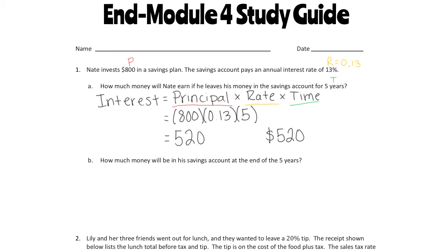For Part B: how much money will be in the savings account at the end of 5 years? To find the total, we are going to add how much he invested — his principal — plus the interest. So we are going to take 800 plus 520, and when we add those together we get a total of $1,320. At the end of the 5 years, he is going to have $1,320.